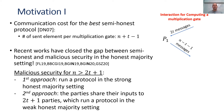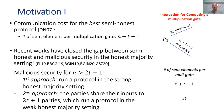Now assume we want to work in the strong honest majority setting. We have two options: run a protocol directly in this setting, or let the parties share their inputs to a subset of 2t plus 1 parties who run the protocol in the weak honest majority setting. It is straightforward to see that the second option results in less communication, so it is not clear what we can gain from working in the strong honest majority setting.